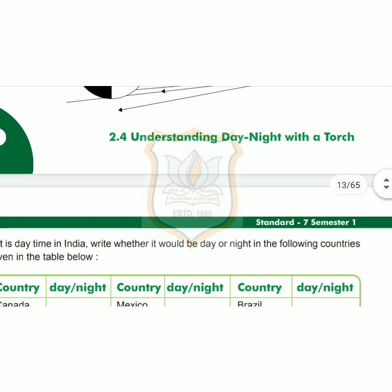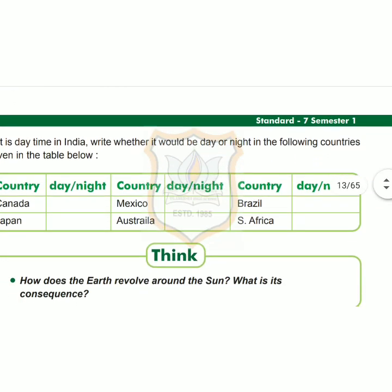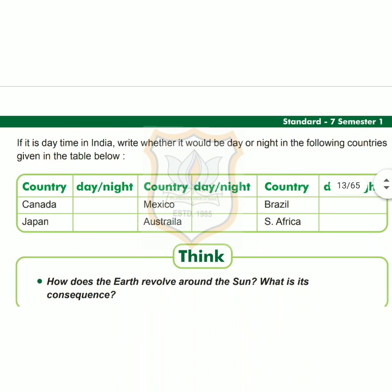Children, on page 9 one table is given. If it is daytime in India, write whether it would be day or night in the following countries given in the table below. Canada will have night. Japan, day. Mexico will have night. Australia, day. Brazil will have night. And South Africa will have day.